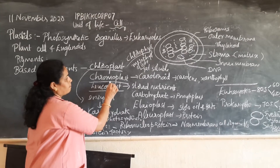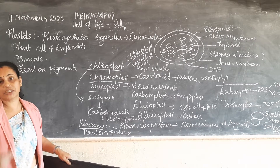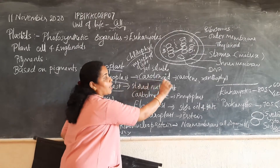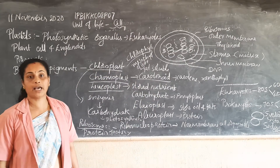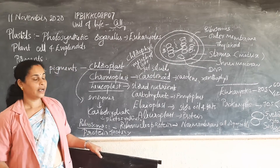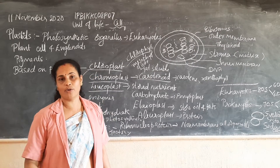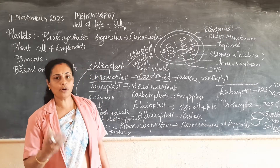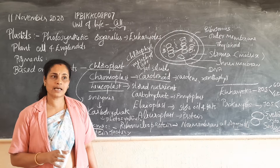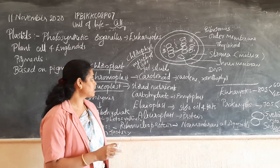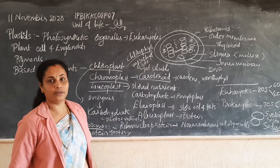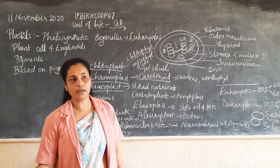Chromo meaning colored - plastids which contain colored pigments. They mainly contain pigments called carotenoids. The pigments are carotene, which is a somewhat red color pigment, and xanthophyll, a somewhat yellow color pigment. These colored plastids are called chromoplast.